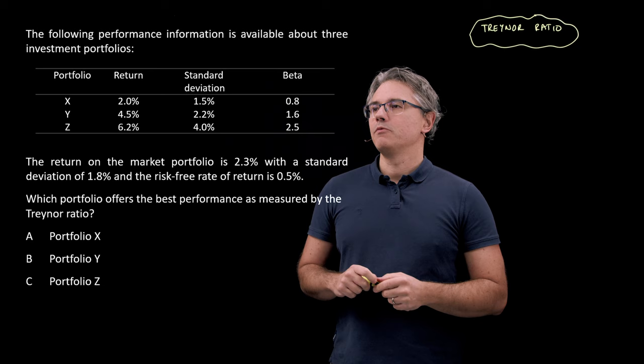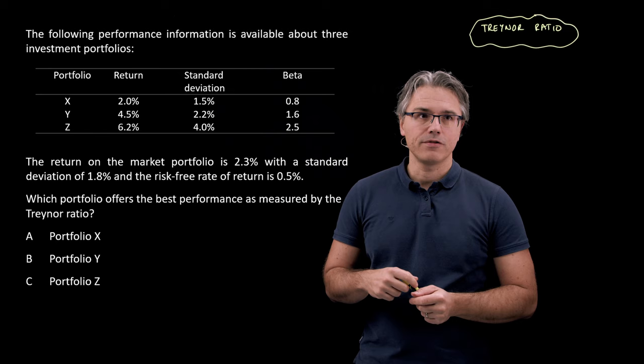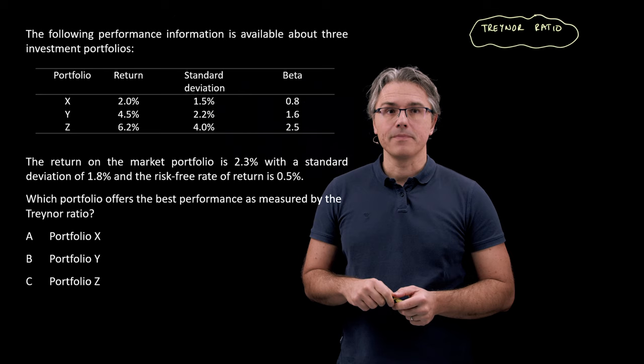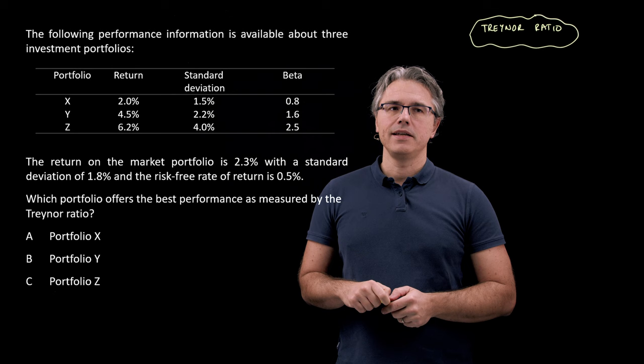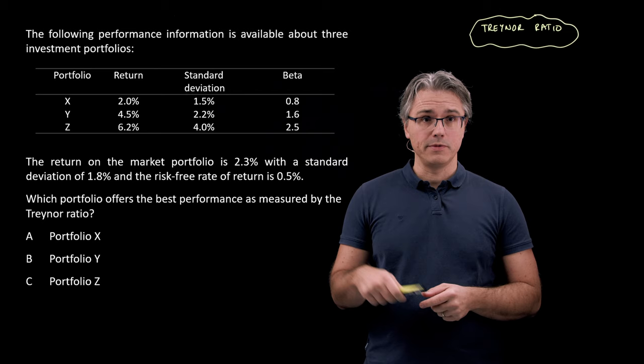So this is the question which I want us to have a go at. The following performance information is available about three investment portfolios: X, Y, and Z, with their returns, standard deviations, and betas. The return on the market portfolio is 2.3% with a standard deviation of 1.8%, and the risk-free rate of return is 0.5%. Which portfolio offers the best performance as measured by the Treynor ratio? It's a simple choice between X, Y, and Z.